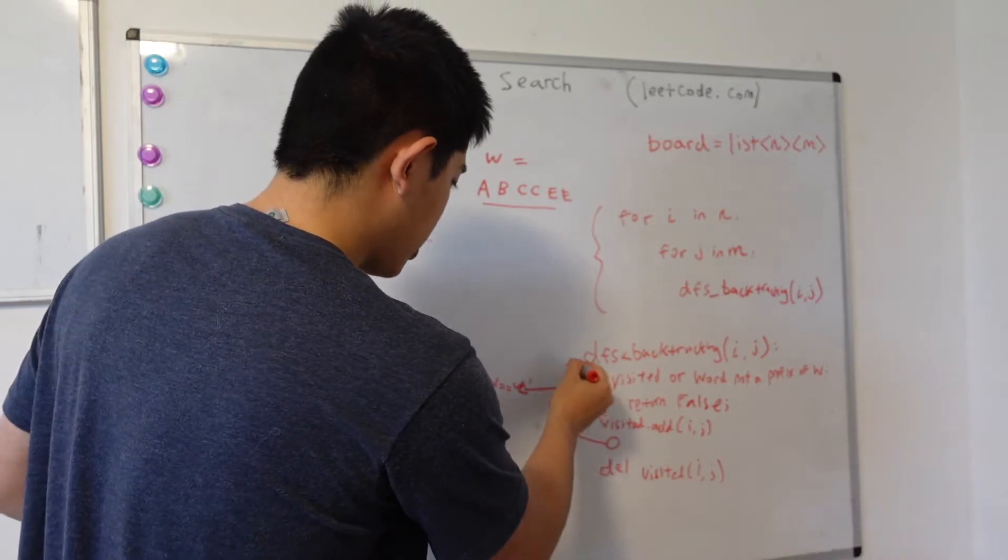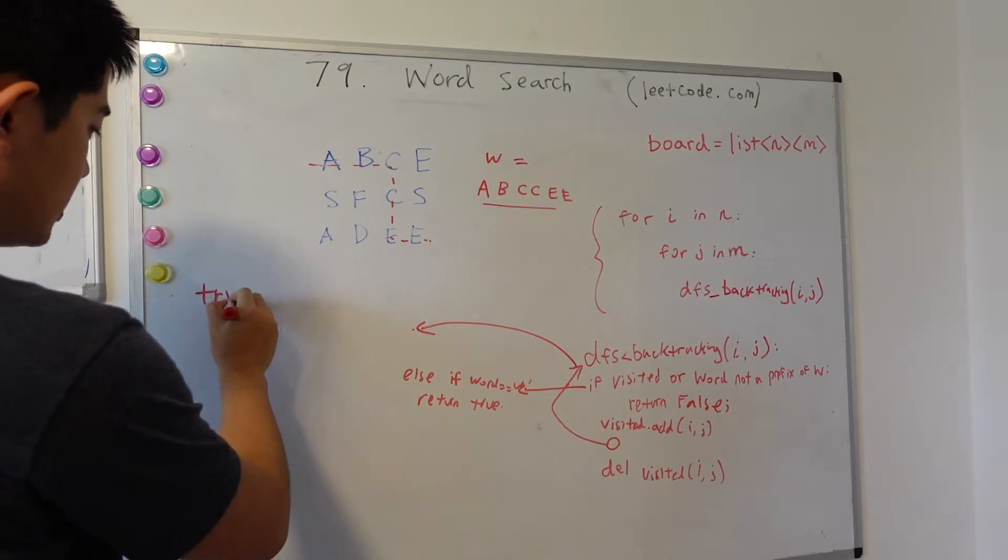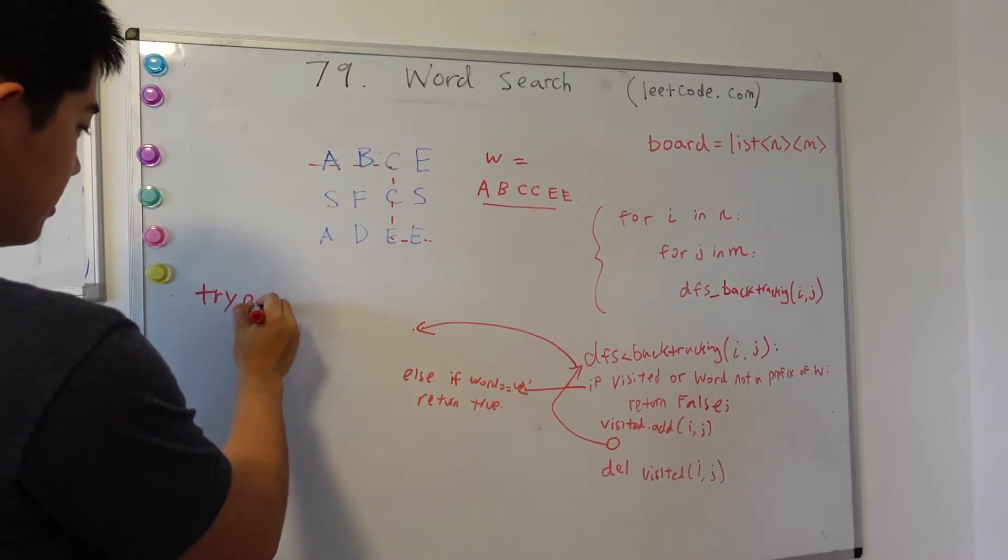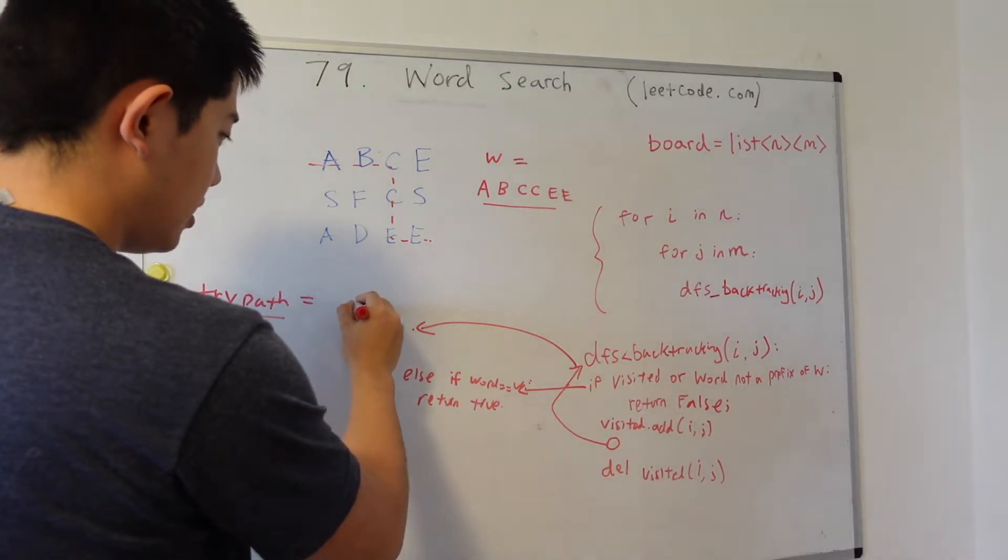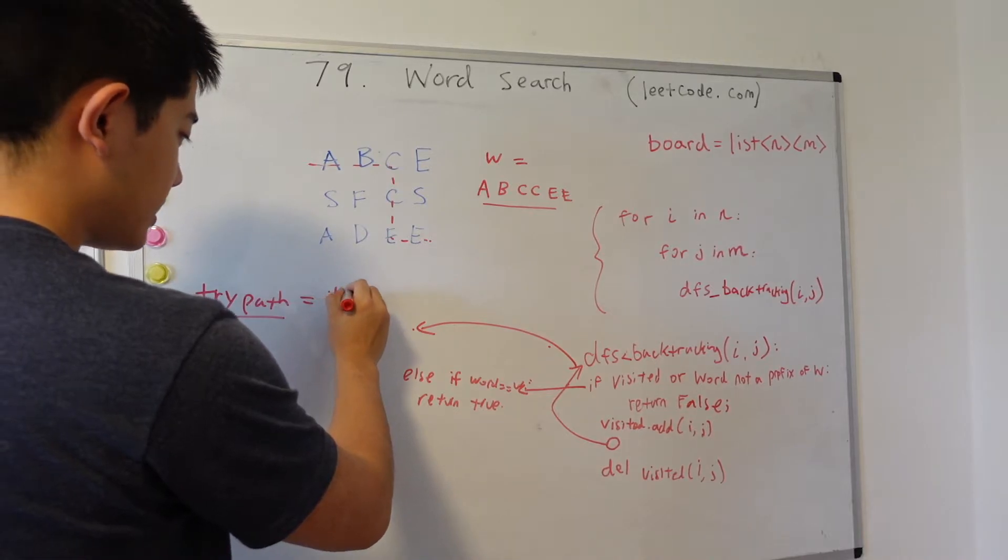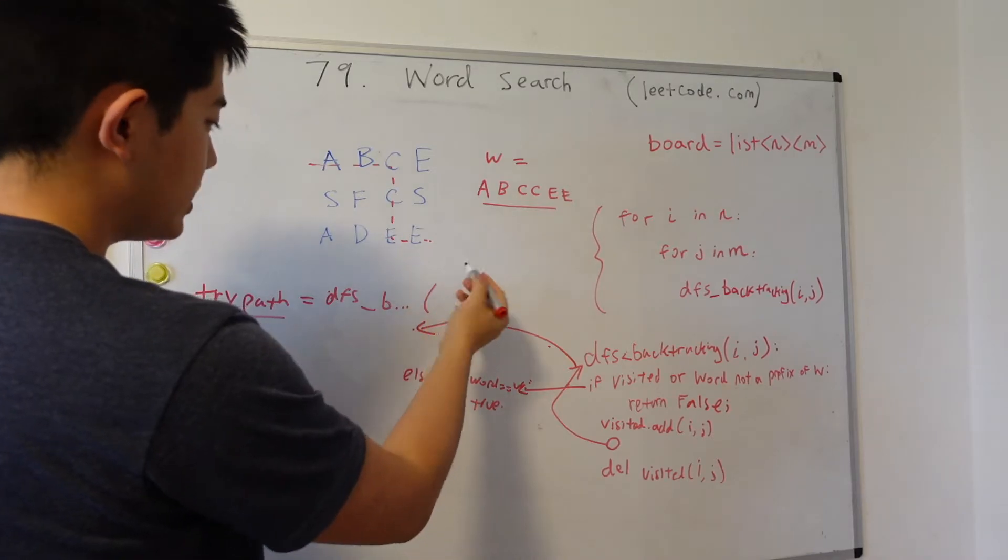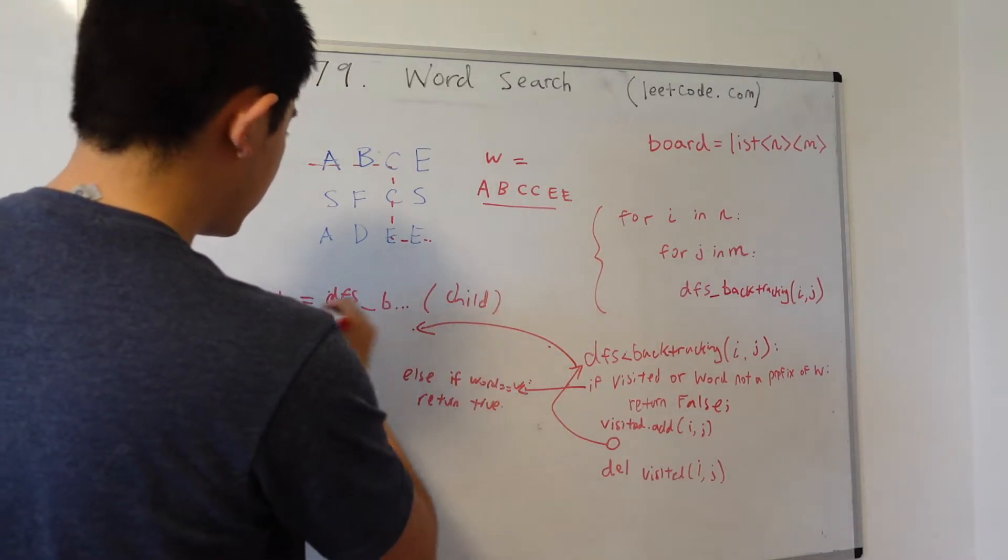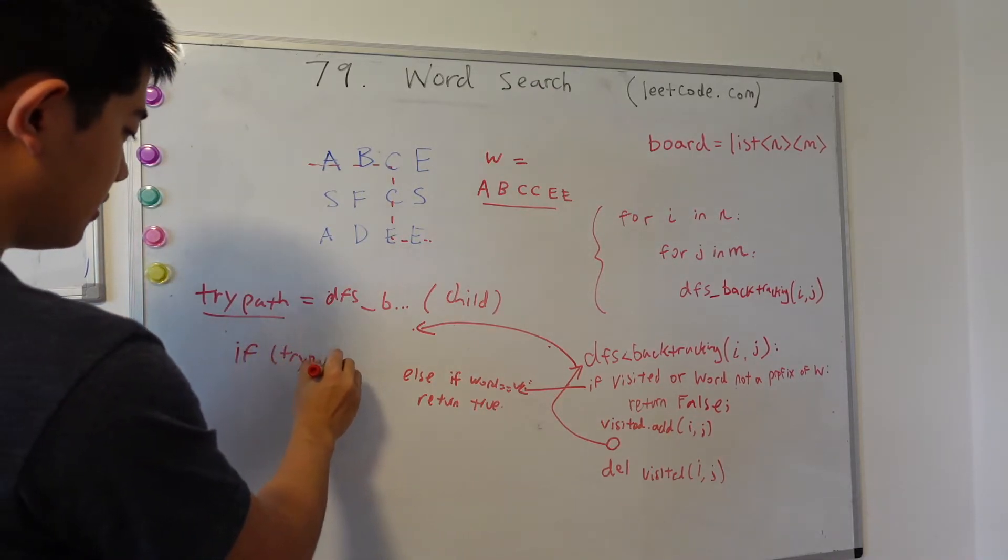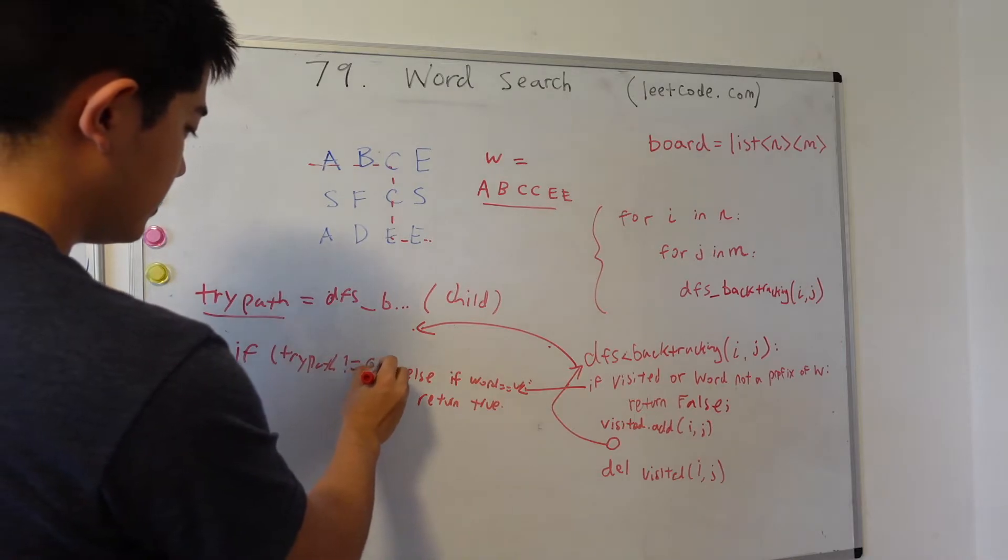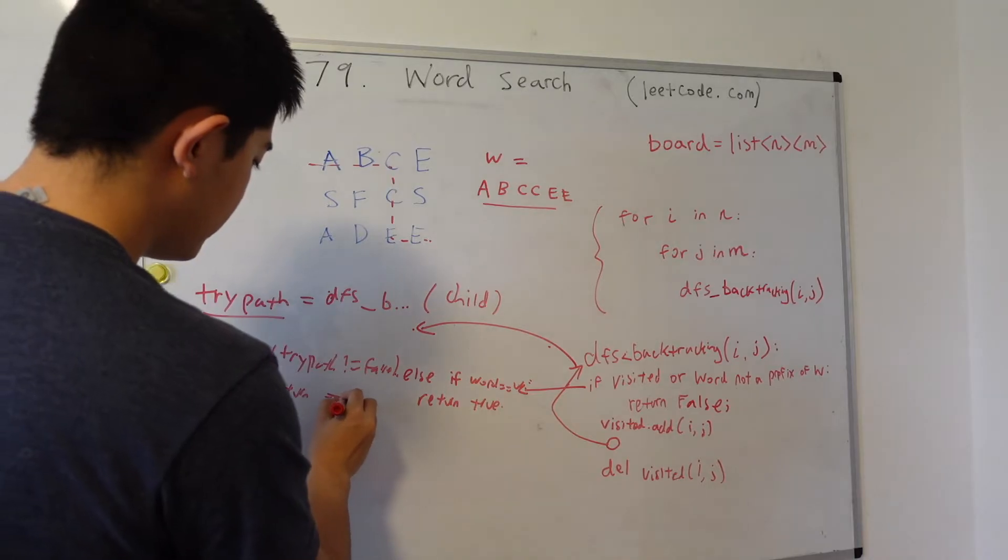In the recursion step, we can set the result of the recursion equal to some variable called tripath over here. And this is the result of the recursive call to DFS with some child node. And we can just do a check, right? If the tripath is not false, then we just return true and go up the call stack from there.